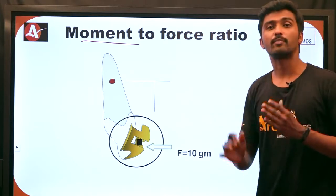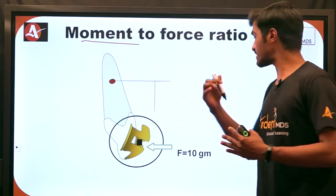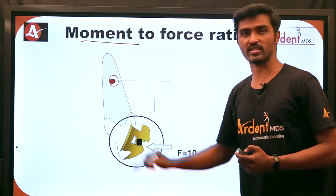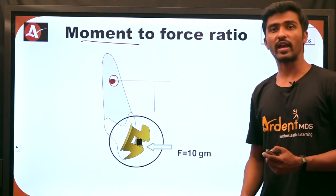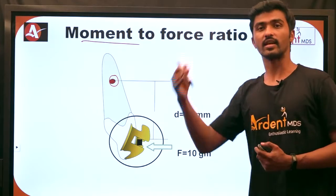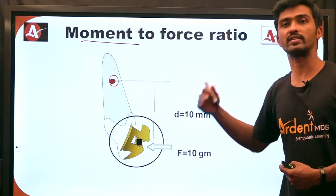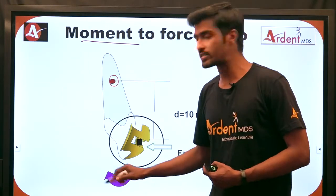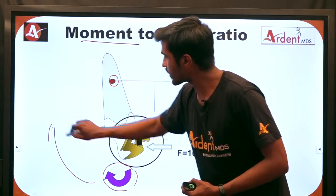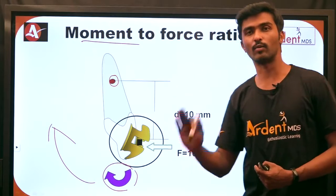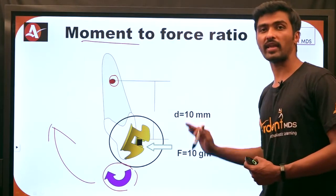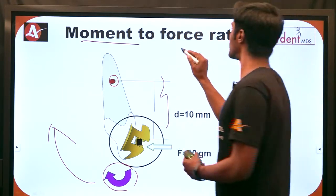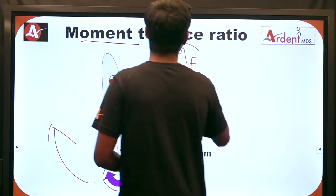Let us consider the situation: I have a tooth and I am applying a force at the bracket level, with a magnitude of 10 grams. Clinically, I can never apply a force through the center of resistance because it is located at the root portion. I have to apply the force at a distance from the center of resistance — let us assume that distance is 10 millimeters. So I will have a rotational tendency in the clockwise direction, which gives me a clockwise moment.